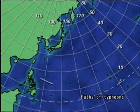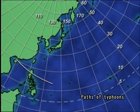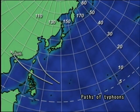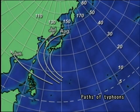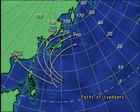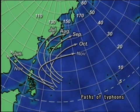Paths of typhoons generally come in two types: those travelling north-west after birth, and those recurving rightwards along the western fringe of the North Pacific Ocean high, then travelling north-east influenced by westerlies. The path of the right-turned type is largely dependent on the strength of westerlies and the North Pacific Ocean high.